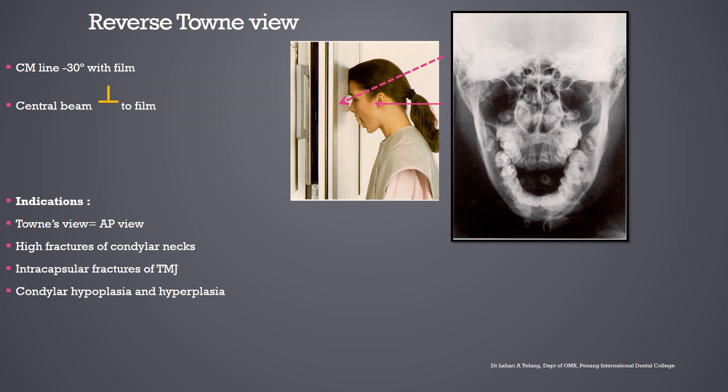Next is the reverse Towne view, named after the person who first recommended it. This is a posterior anterior view where the person's head is tilted downwards and the canthomeatal line is at 30 degrees to the sensor or film. The central beam comes from the occipital region directed forwards, perpendicular to the sensor. The reverse Towne's view is more commonly used than the Towne's view, which is an anterior posterior view. Indications include high fractures of the condylar neck, intracapsular fractures of the TMJ, and condylar hypoplasia and hyperplasia. The patient's oral cavity is open and the head is bent downwards with the canthomeatal line at minus 30 degrees to the film.